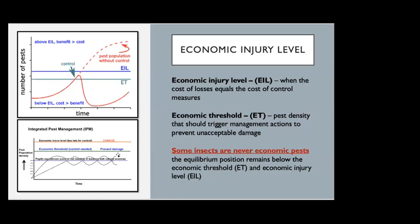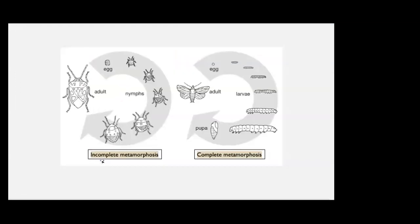Something to keep in mind is that in the graph below, some insects are never economic pests. Their equilibrium position means their population always remains below the economic threshold and the economic injury level. Natural enemies or parasitoids keep them in check, so their numbers fluctuate over time but never cause what would be considered economic damage. With that aside, now we can move on to the fun part — insects.